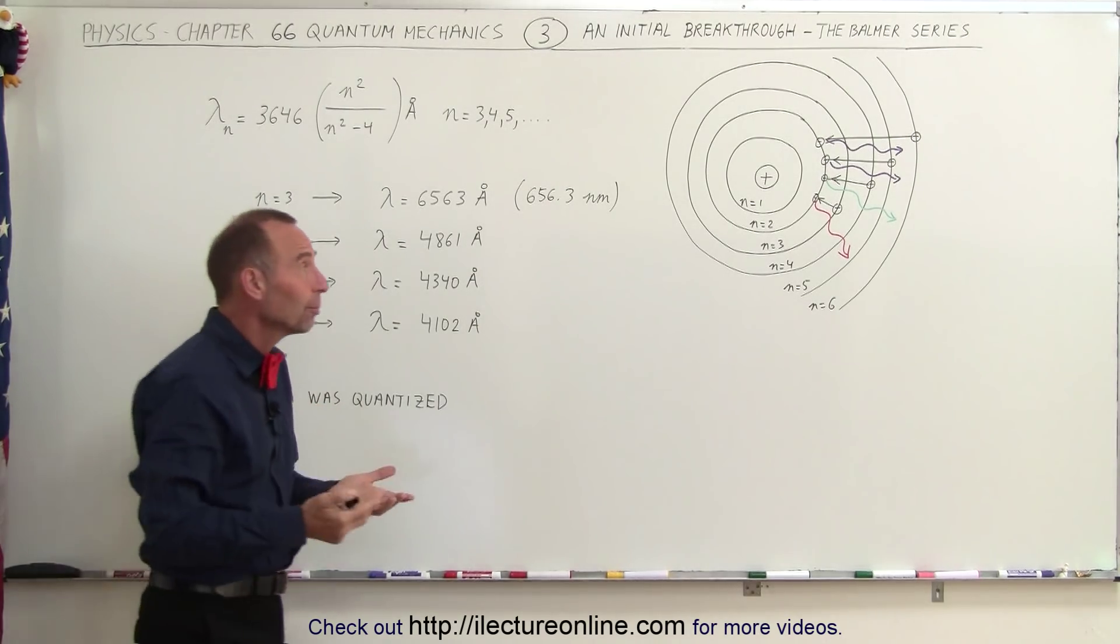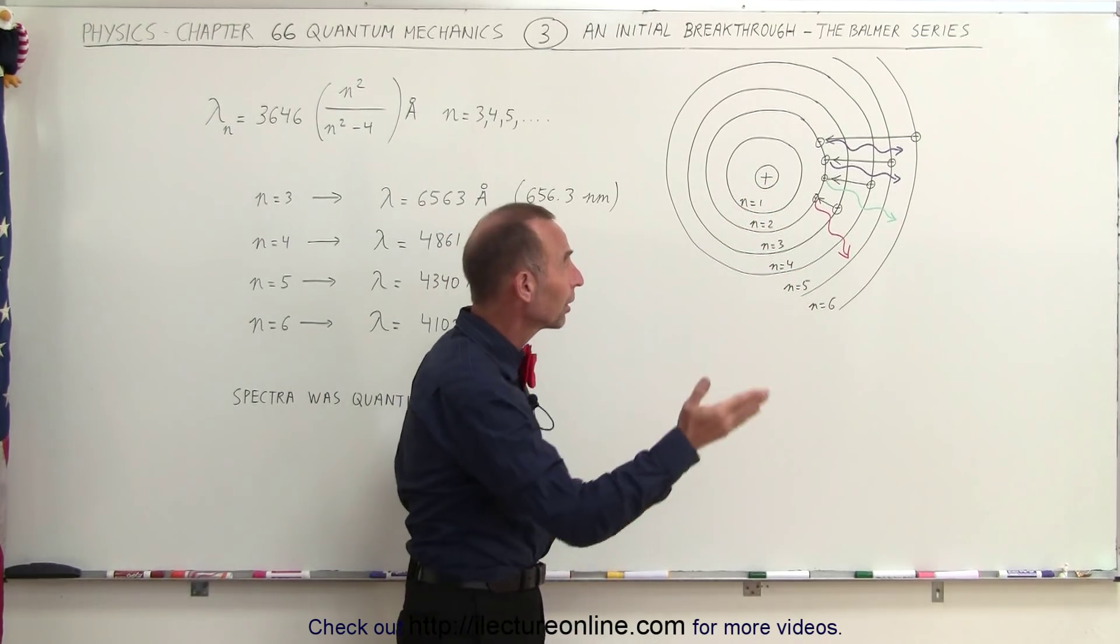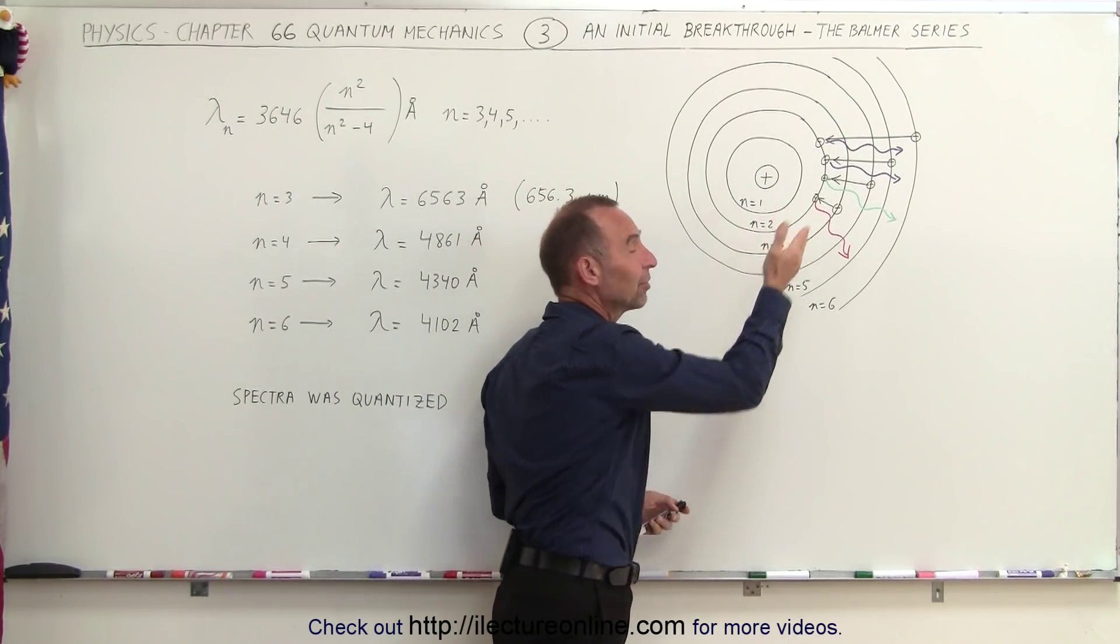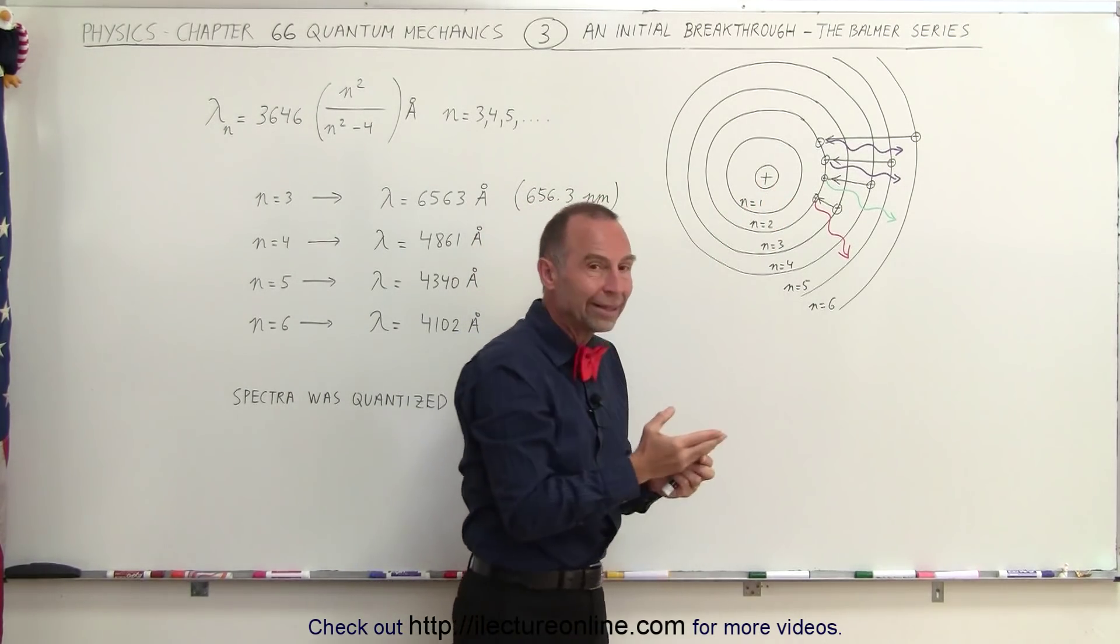And so when we go to the most simple atom in the universe, the hydrogen atom, we have a single proton, a single electron. We know that the electron can exist in particular orbits around the nucleus and that these positions are quantized.